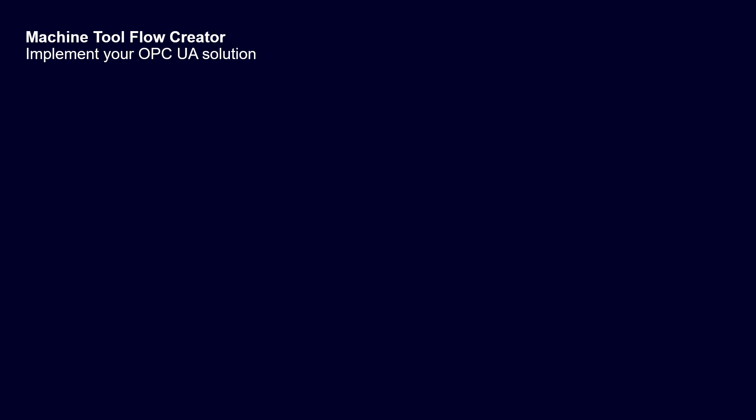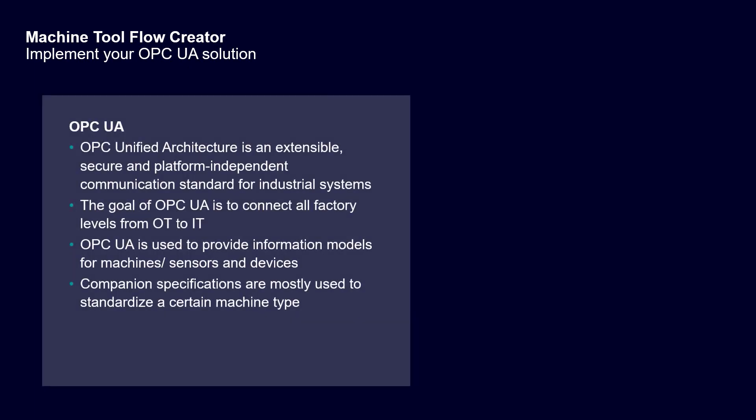Let's do a short recap on OPC UA. OPC Unified Architecture is an extensible and open communication standard which is mostly used for industrial systems, and the goal is to connect the OT world with the IT world — so to connect the sensor level to the IT systems of the company. OPC UA is used to provide information models which contain different variables from machines, sensors, and devices.